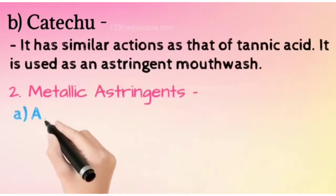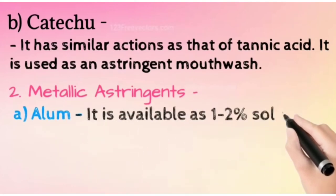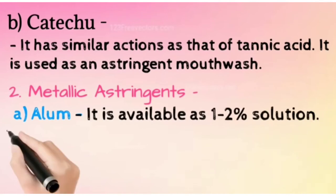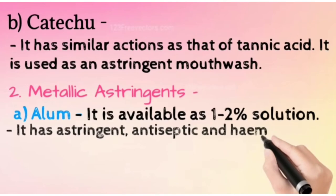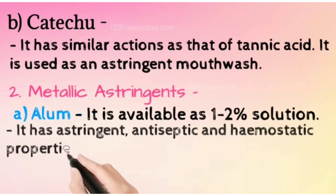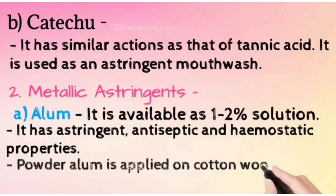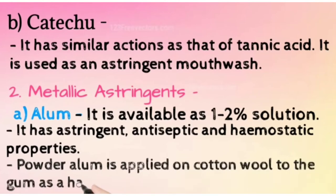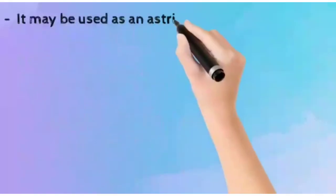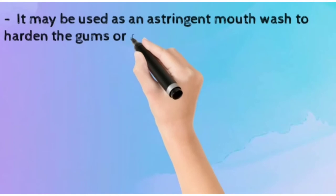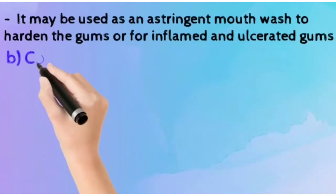The second type is metallic astringents. First comes alum. It is available as 1-2% solution. It has astringent, antiseptic, and hemostatic properties. Powder alum is applied on cotton wool to the gum as a hemostatic. It may also be used as an astringent mouthwash to harden the gums, or for any inflamed and ulcerated gums.